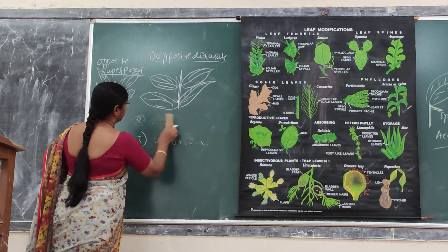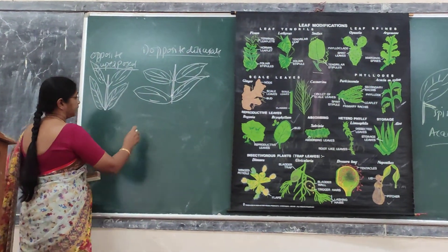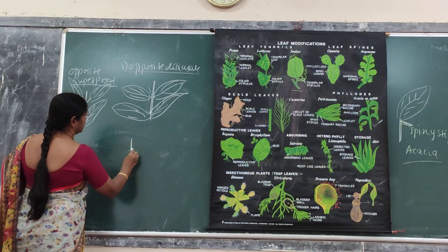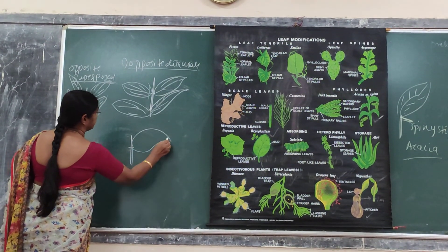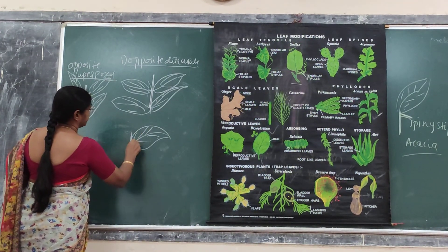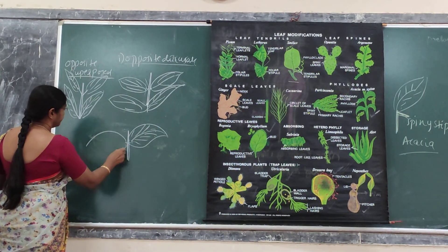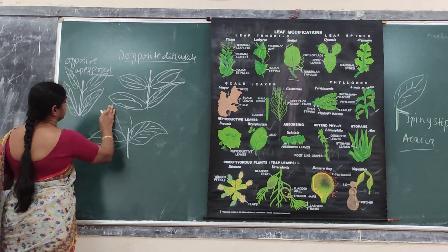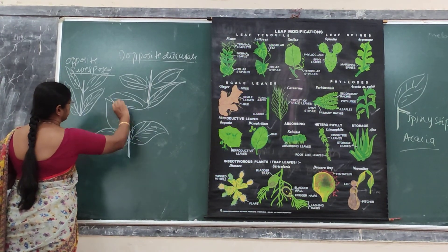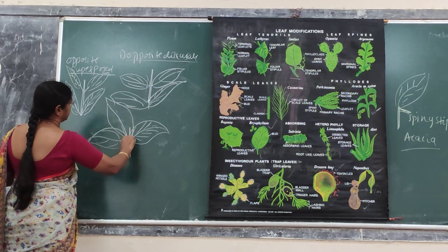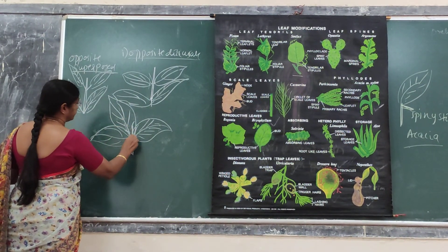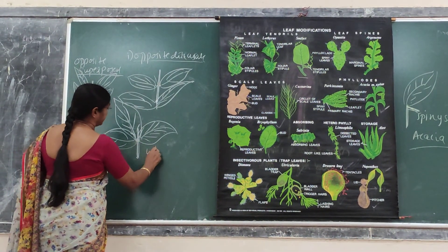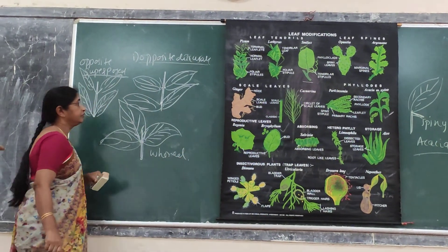Next, coming to whorled phyllotaxy — here you can see three leaves from a single node, as in case of Nerium. A group of three leaves arranged from a node is called whorled phyllotaxy.